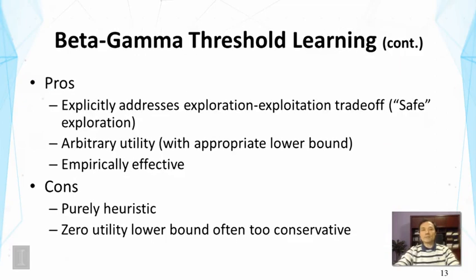Now this approach actually has been working well in some evaluation studies, empirically effective. And also can work on arbitrary utility with a proper lower bound. And it explicitly addresses the exploration and exploitation trade-off. And it kind of uses the zero utility threshold point as a safeguard for exploration and exploitation trade-off. We're never going to explore further than the zero utility point. So if you take the analogy of gambling, you don't want to risk on losing money. So it's a safe strategy, a conservative strategy for exploration. And the problem is, of course, this approach is purely heuristic. And the zero utility lower bound is also often too conservative. And there are, of course, more advanced machine learning approaches that have been proposed for solving these problems. And this is an active research area.